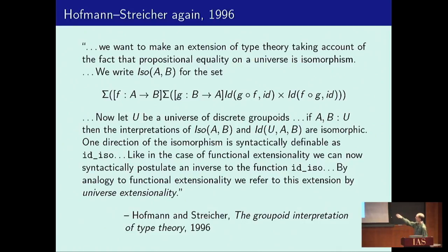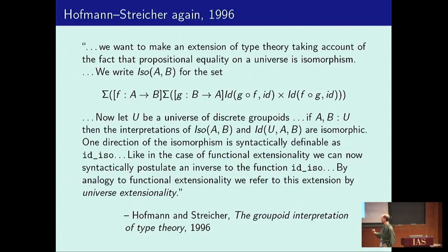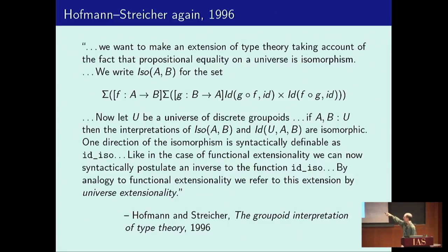They say if you have a universe of discrete groupoids — sets, basically — then this type of isomorphisms is isomorphic to the identity type of that universe. It's definable in one direction and you postulate an inverse in the other direction. They call this 'universe extensionality' by analogy with function extensionality. This is really literally the univalence axiom — expressed in exactly the same way: define one direction of the isomorphism and then the other direction is postulated as an axiom.